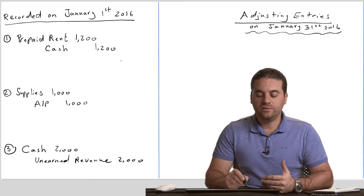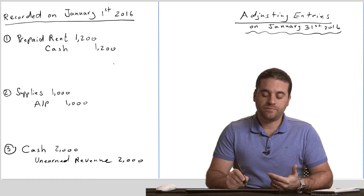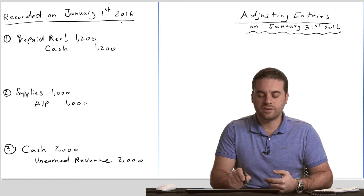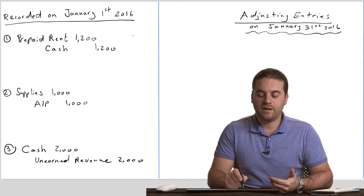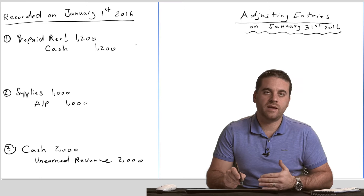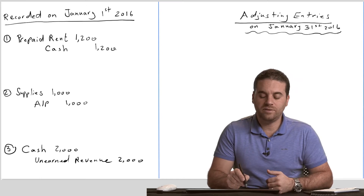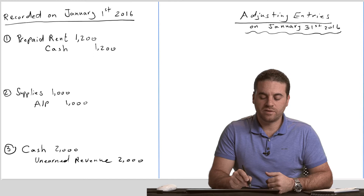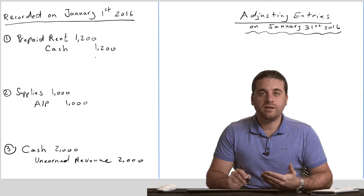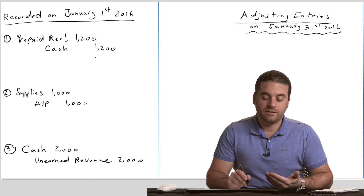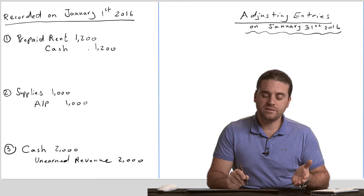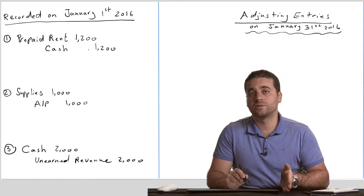Let's say they were recorded on January 1st, 2016. What would happen at the end of January, or end of February, or end of any month after January 1st? What would happen to the balance for the prepaid rent, supplies, and unearned revenue? Is it going to remain the same? Did we pay $1,200 and consider it an asset for prepaid rent, and it's going to continue being our asset for $1,200 forever?